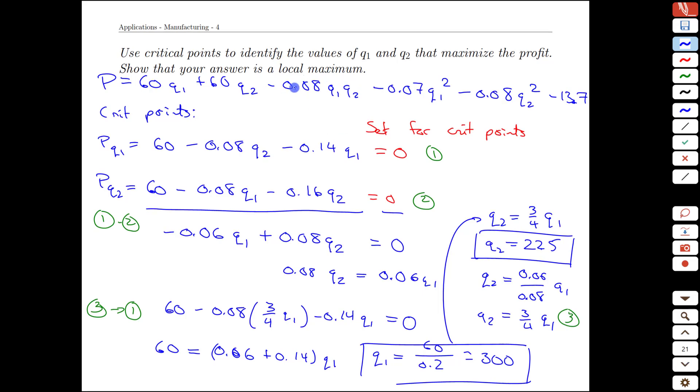Now our next step is to identify or confirm that this is actually a local maximum. And of course, that requires the second derivative test. We'll do that on the next page. Though we'll copy over the first derivatives here so we can get to the second derivatives on the next page.